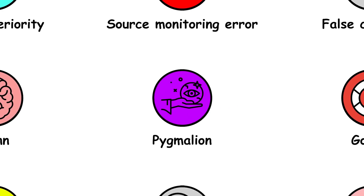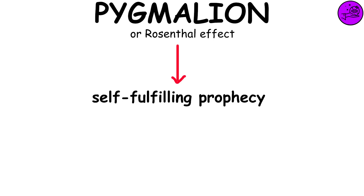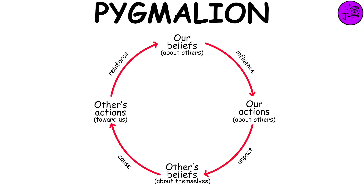Pygmalion effect, also called the Rosenthal effect, refers to the self-fulfilling prophecy where one person's expectations or beliefs about another influence the latter's behavior so that the initial expectations come true.